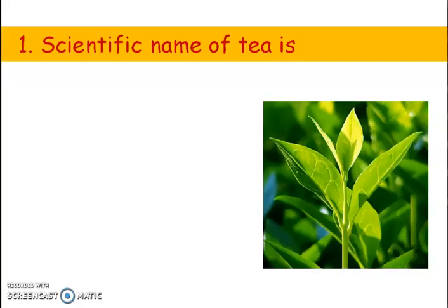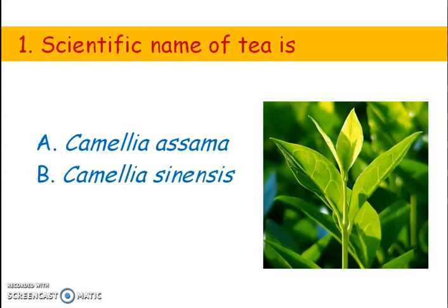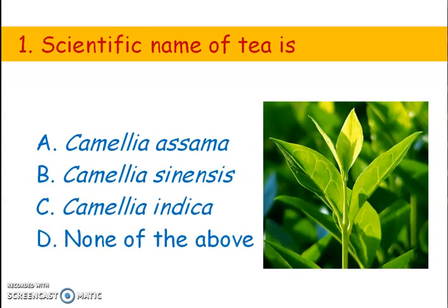First question. What is the scientific name of tea? Options: A) Camellia asama, B) Camellia sinensis, C) Camellia indica. The right answer is option B, Camellia sinensis. Camellia sinensis is the scientific name or botanical name of tea. And tea originated in China.